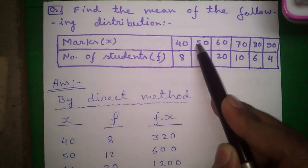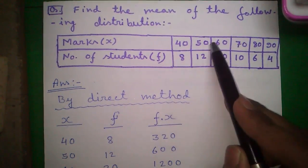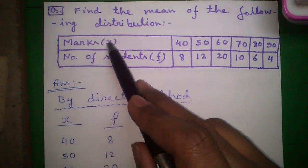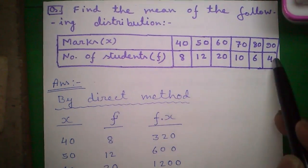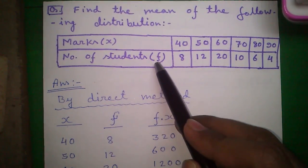Here are some marks of students given: 40, 50, 60, 70, 80, and 90 denoted by X. And number of students which got the same marks are given in the second row denoted by F.